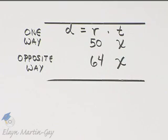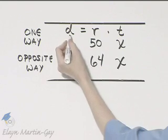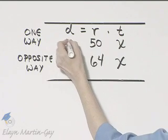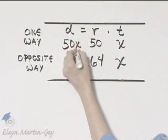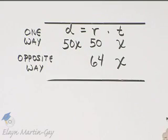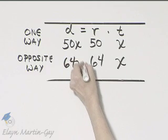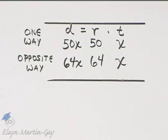Now, let's use the formula, distance equals rate times time, and let's fill in the distance column. Rate times time here would be 50X, and that is a distance for the one train. Rate times time would be 64X. That is a distance for the other train. Is there anything in the problem we have not used yet?